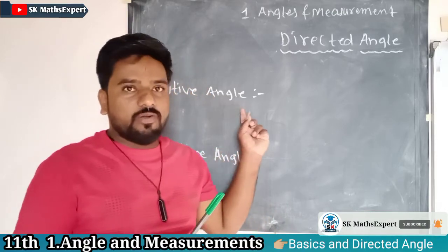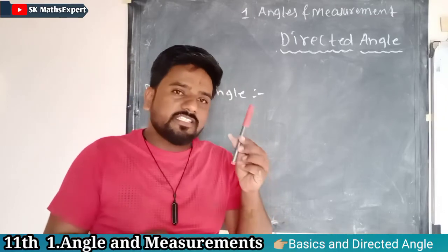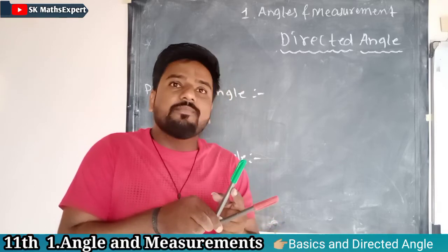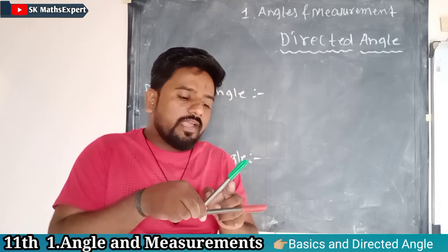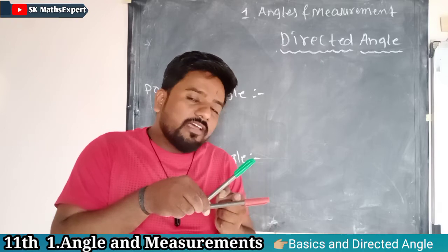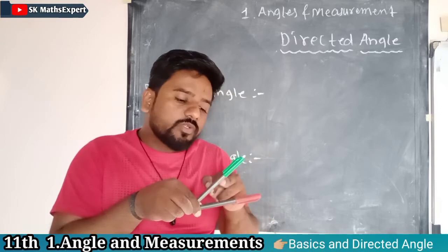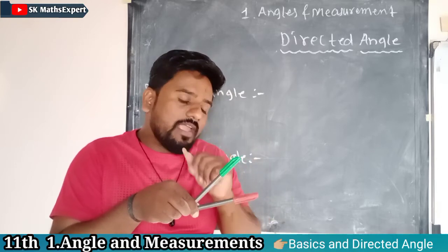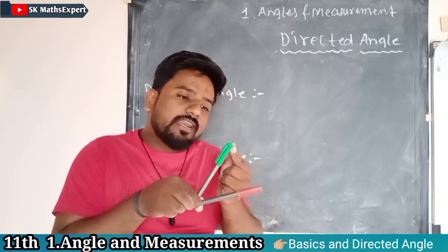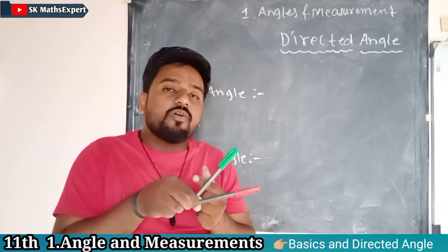Let's see the definition of positive angle. This is the green ray and this is the red ray. If we rotate this green ray in an upward direction — that is, in the anti-clockwise direction — you will get some angle between the red ray and the green ray. This angle must be a positive angle because the rotation is in anti-clockwise direction. This constant ray is called the initial ray, and this rotated ray is called the terminal ray.